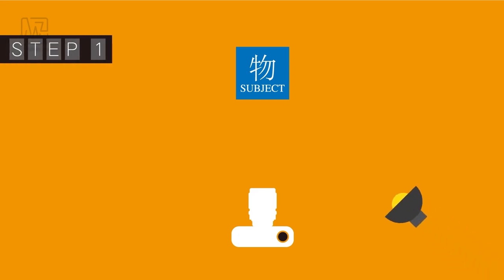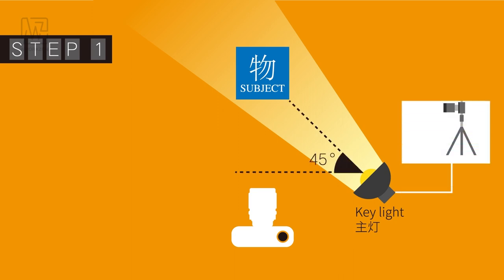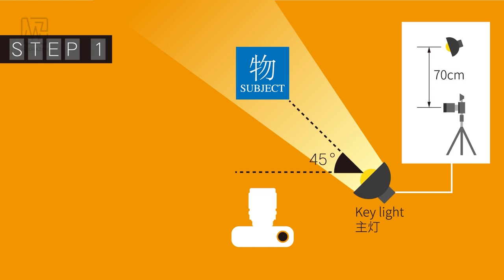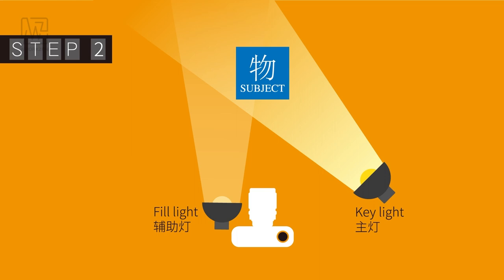To set up lighting: first, set the key light. Use a photo floodlight as the key light source. Its position depends on the desired effect, but it is usually placed beside the subject at about 45 degrees to the side, with its horizontal position about 70 centimeters higher than the camera. Second, add the fill light. A fill light highlights details in the shadow area, but must be weaker than the key light since the key light determines the shadow. The fill light should be placed directly beside the camera to avoid creating new shadows and to reduce contrast.